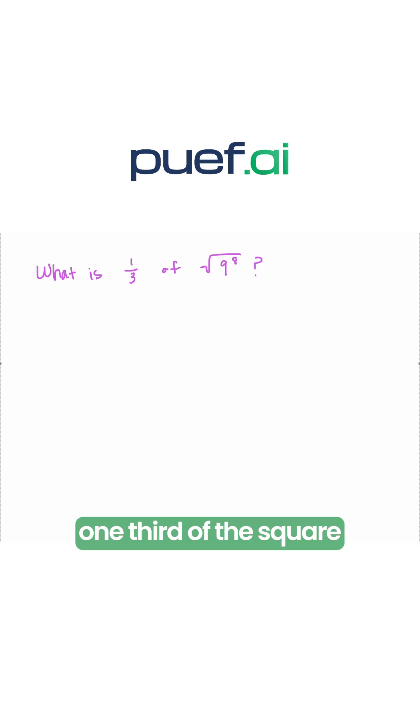In order to figure out 1 third of the square root of 9 to the power of 8, we need to remember our exponent rules that allows us to rewrite a square root as an exponent.